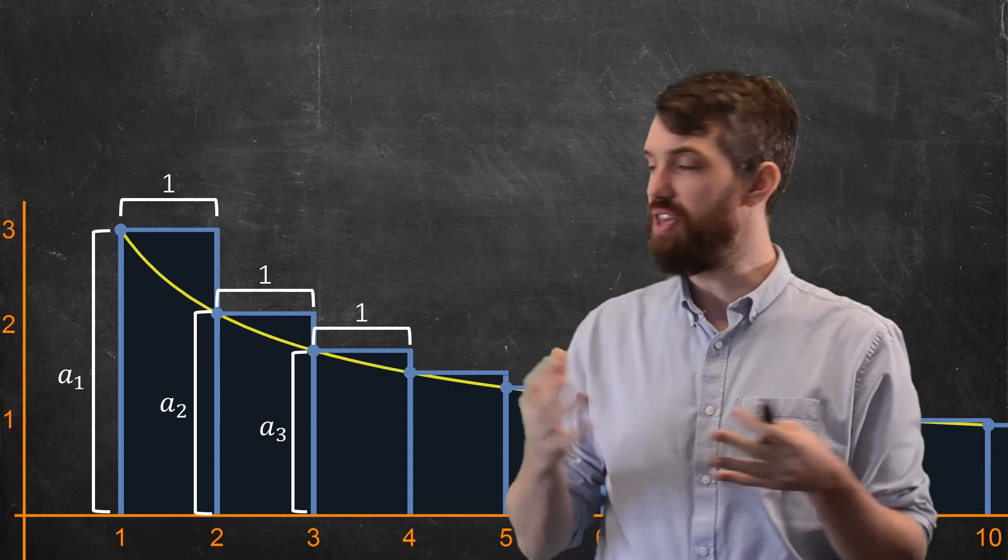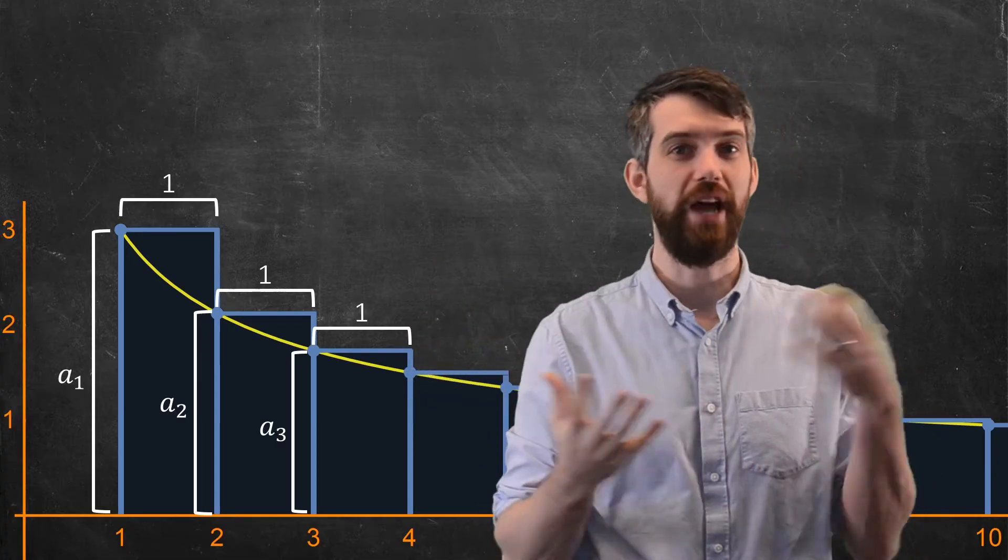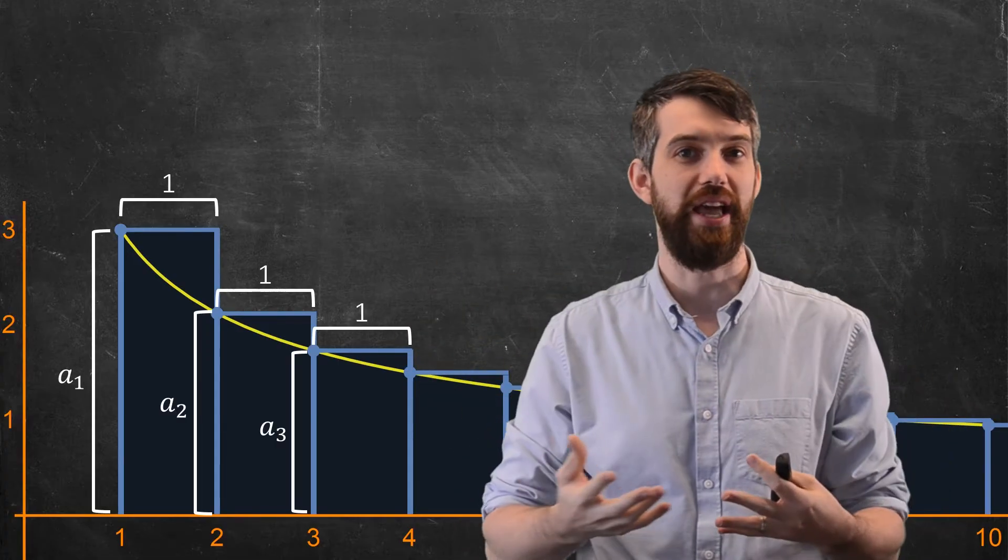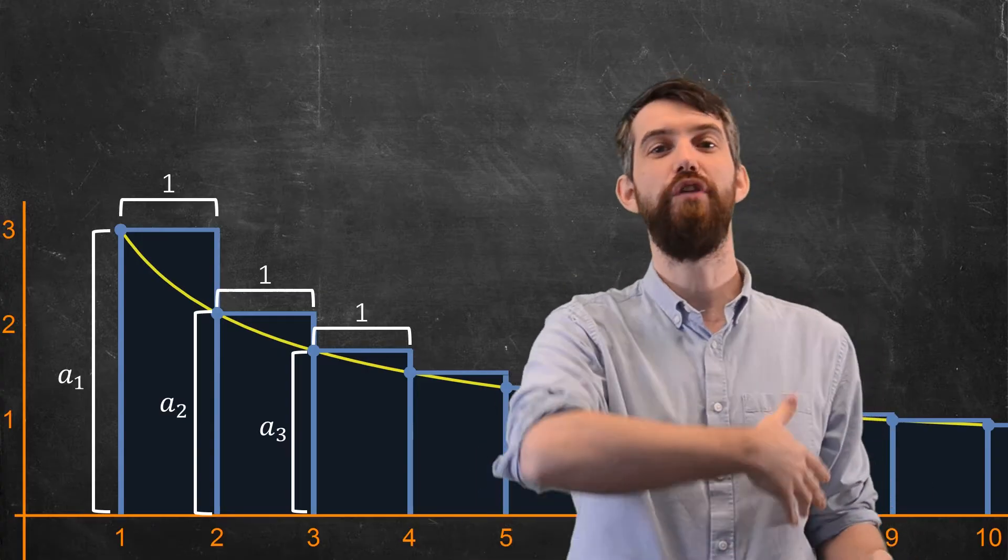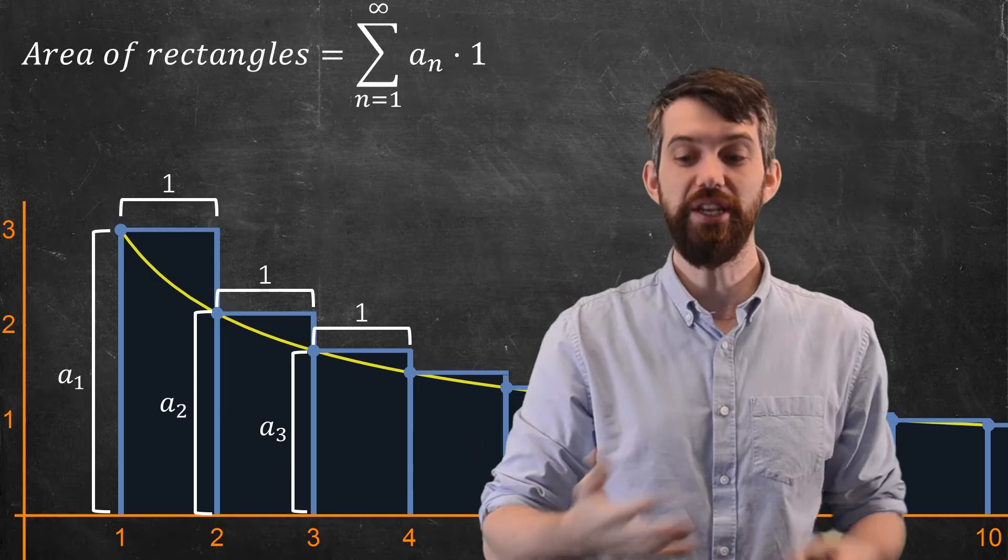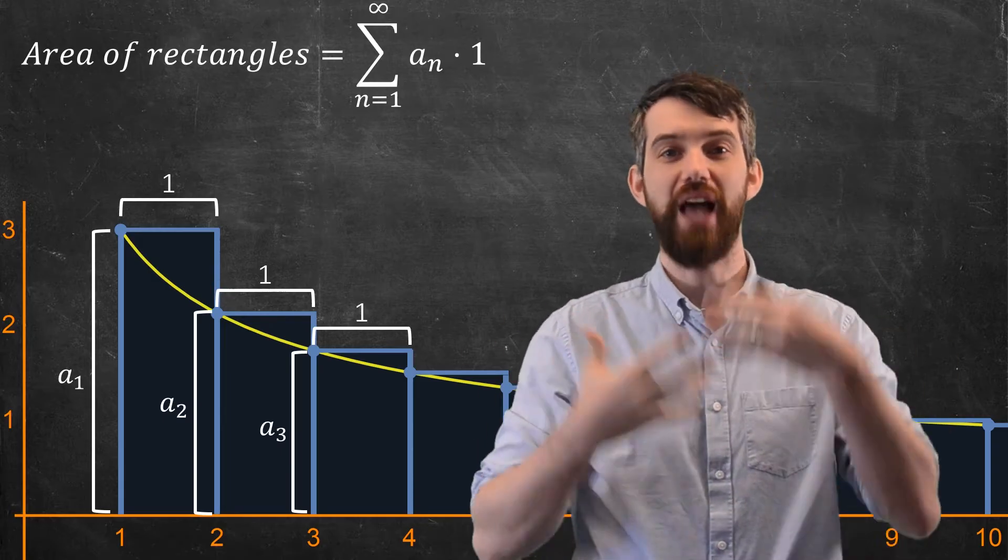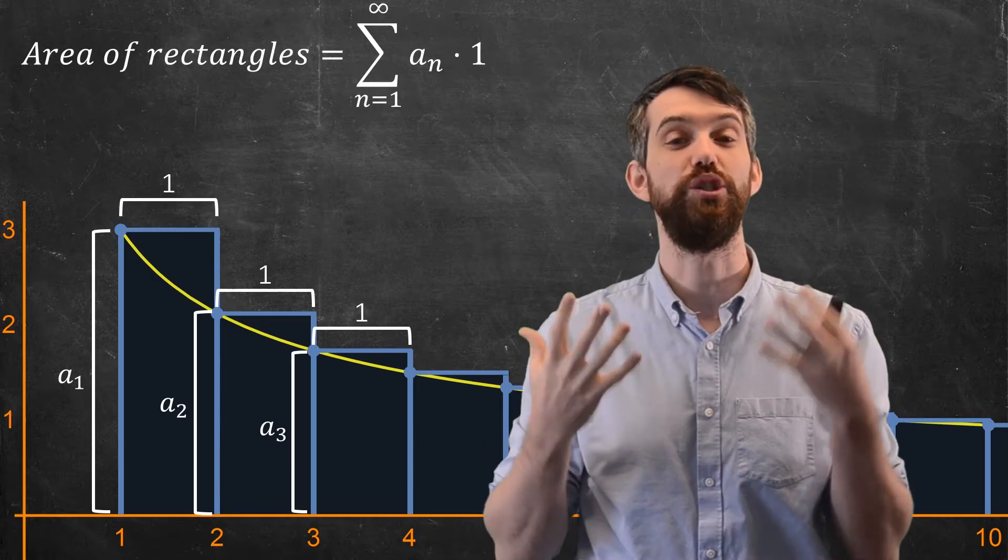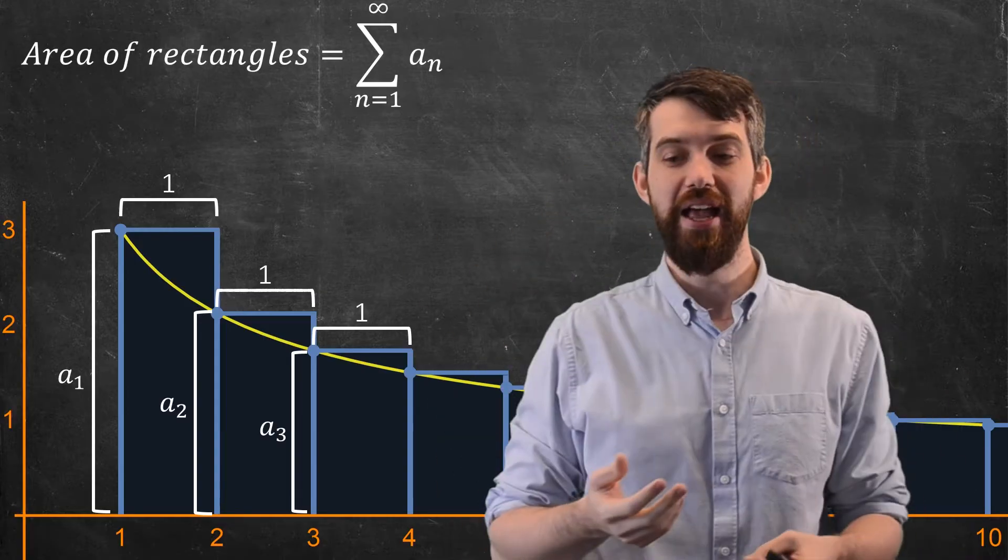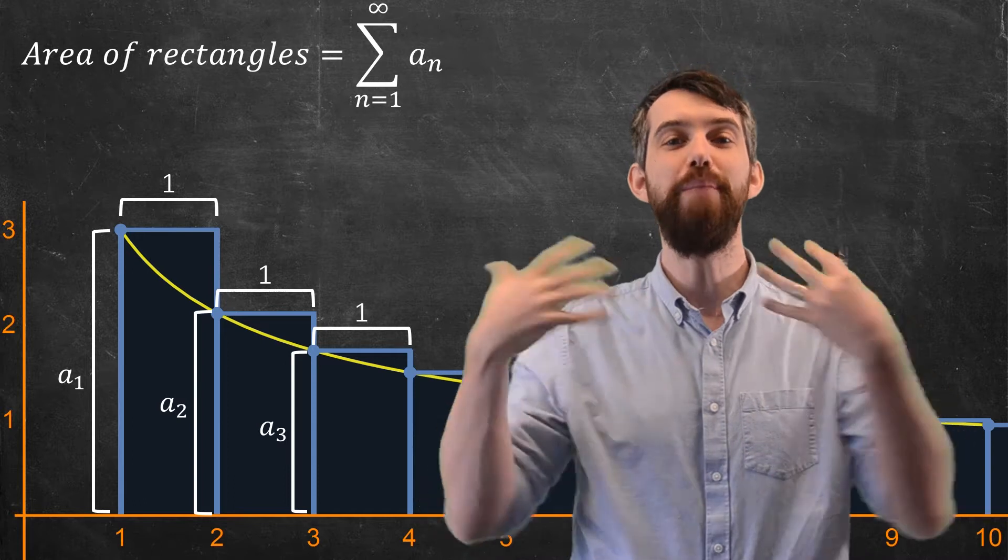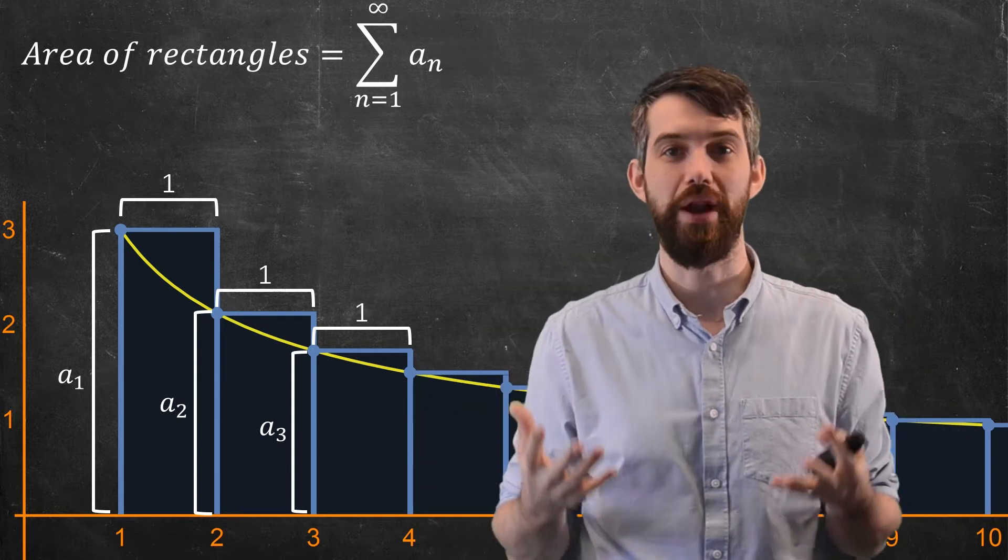So then, the area of the first rectangle is 1 times a₁. The area of the second rectangle is 1 times a₂. And generally, if I want to talk about the area of all of the rectangles, this is going to be a summation, a sum from 1 to infinity of these heights aₙ times these widths 1. Multiplying by 1 doesn't do anything, so I can get rid of that.